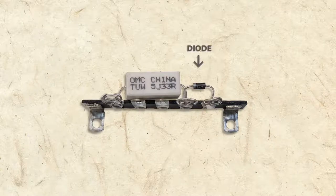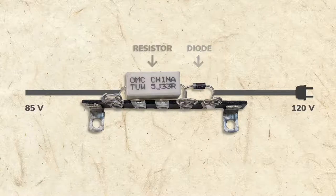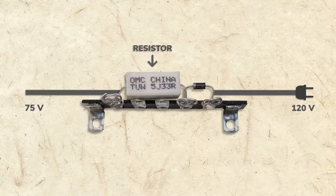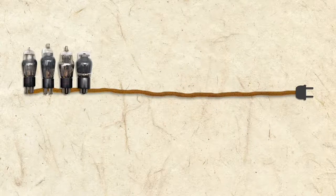A diode to drop voltage from 120 to 85 volts, and a resistor to drop voltage further to 75 volts, exactly as the resistance cord did, to provide just the right voltage for the tube filaments.